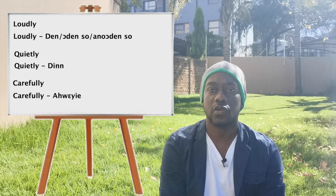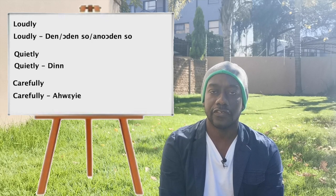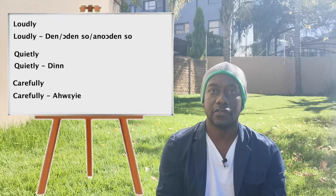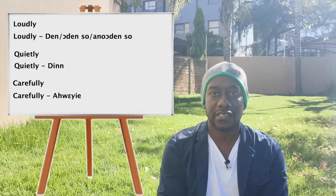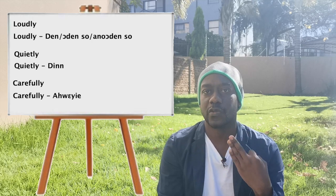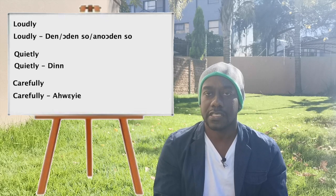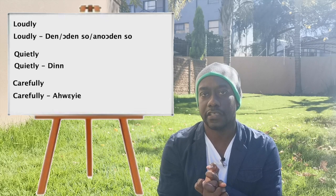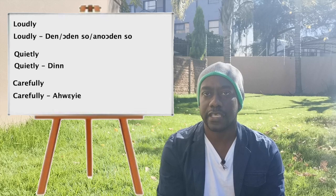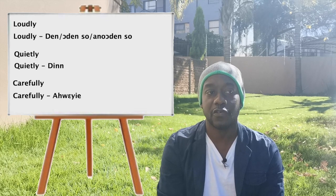The next person was Isaiah, who wanted to know three things. First, 'loudly' in Chi can be said three ways: 'ding', 'wu ka sa ding' meaning you're speaking too loud, 'o ding su', or 'an wo ding su.' Second, 'quietly' in Chi is 'ding.' Third, 'carefully' in Chi is 'asheye', which we also covered at the beginning of this lesson.